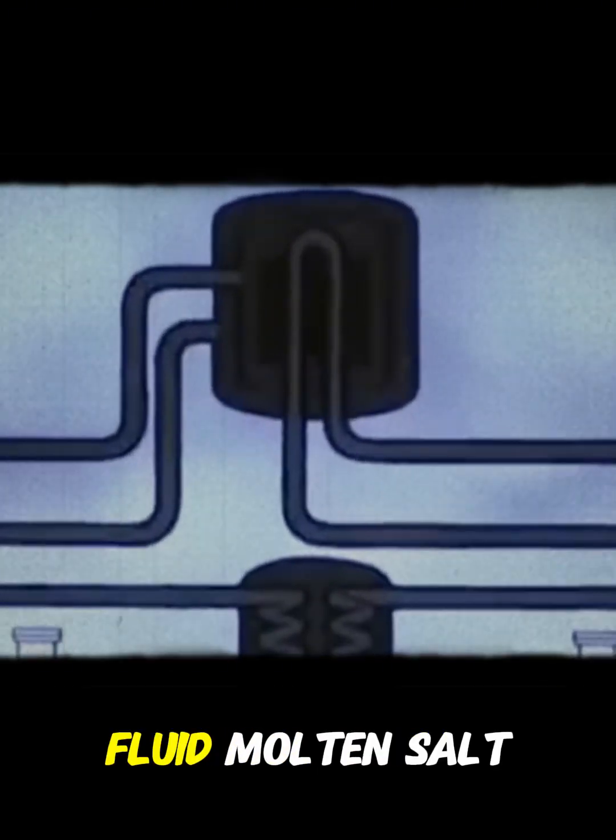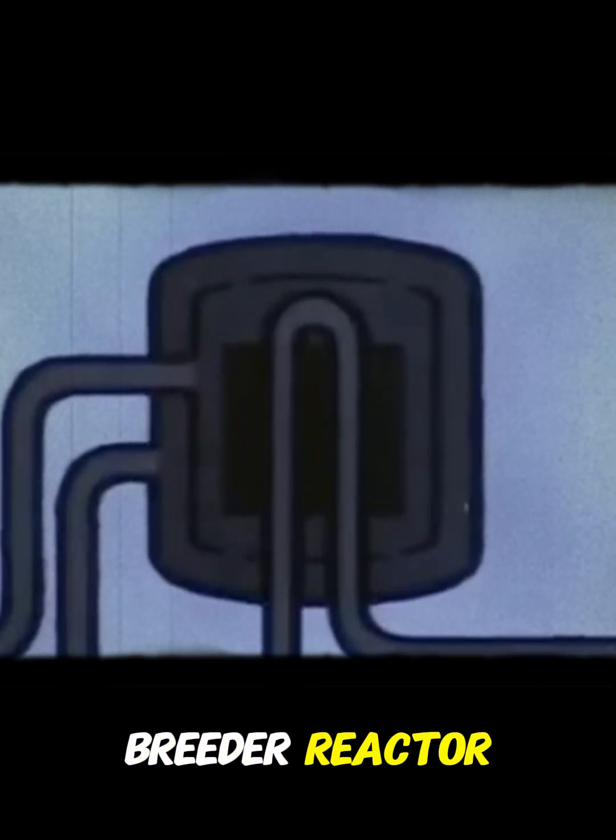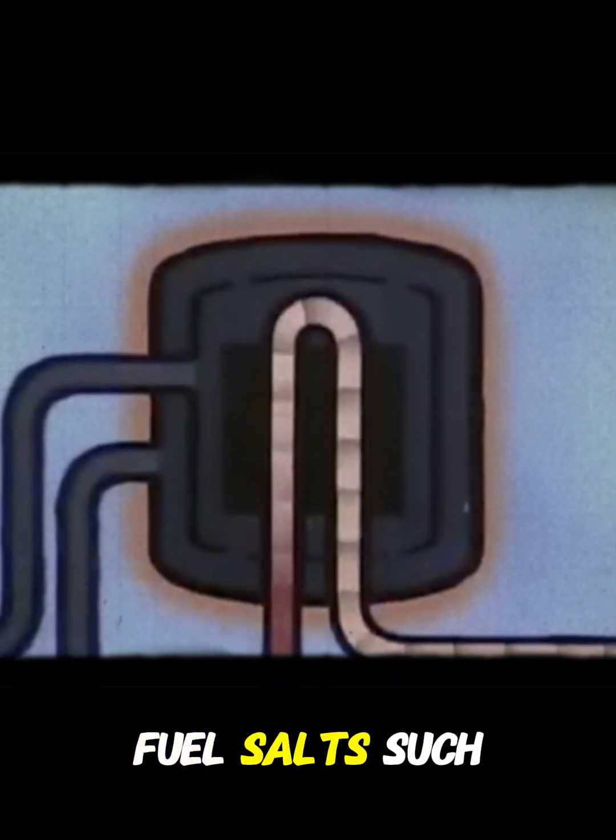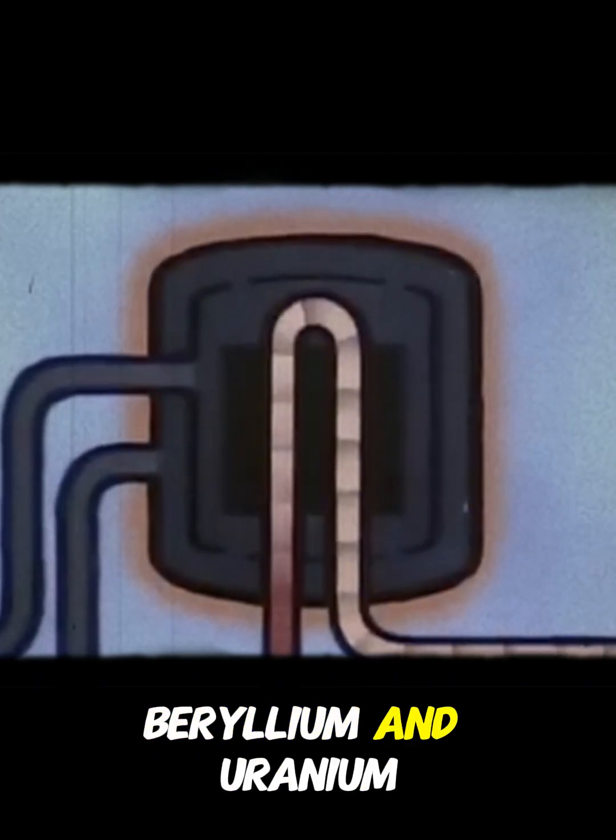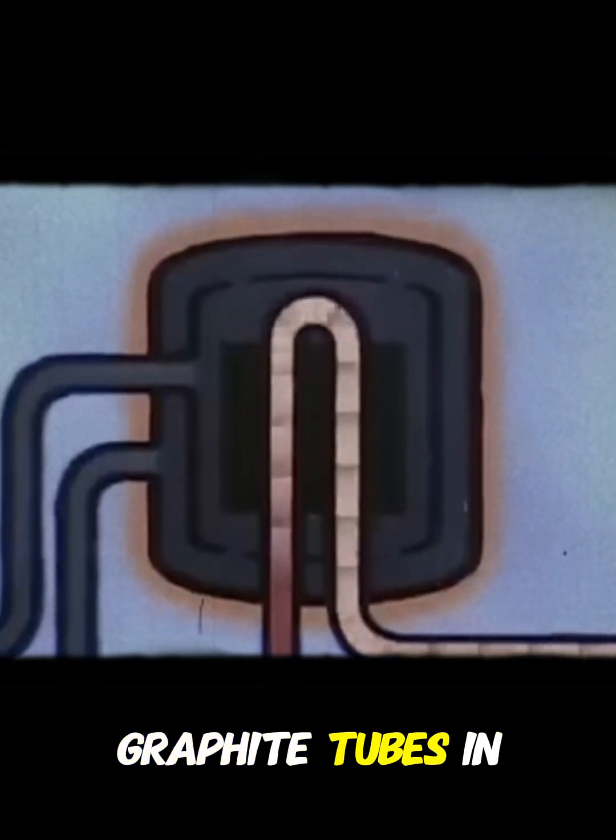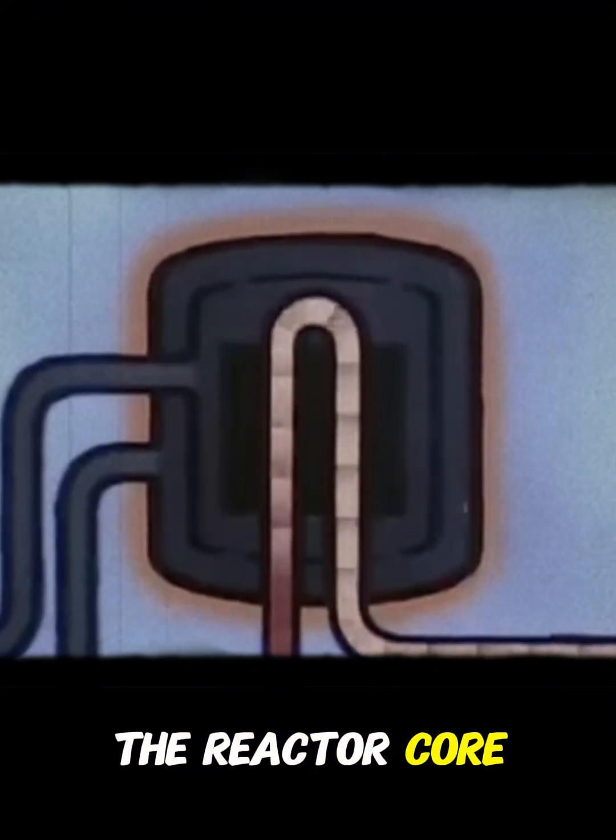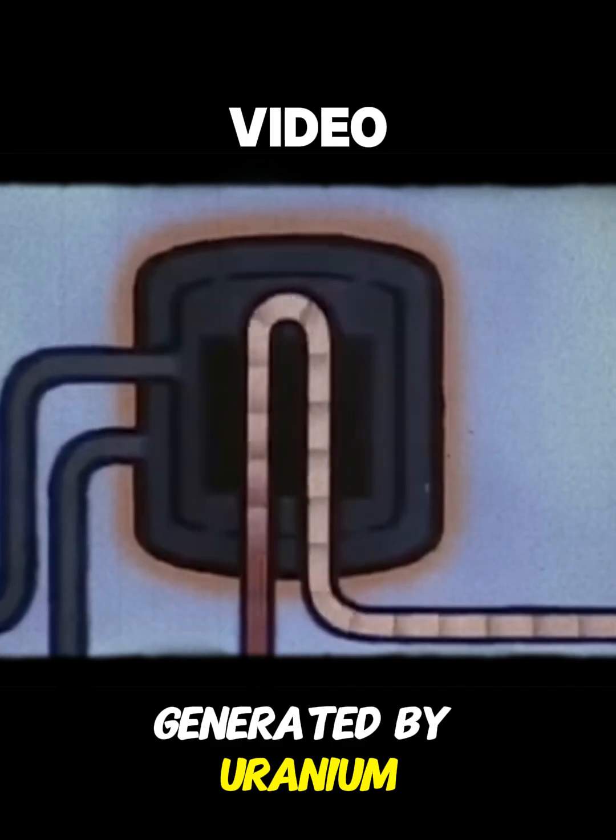In the design of a two-fluid molten salt breeder reactor, the mixture of fuel salts such as lithium, beryllium and uranium fluorides is pumped through graphite tubes in the reactor core where heat is generated by uranium fission.